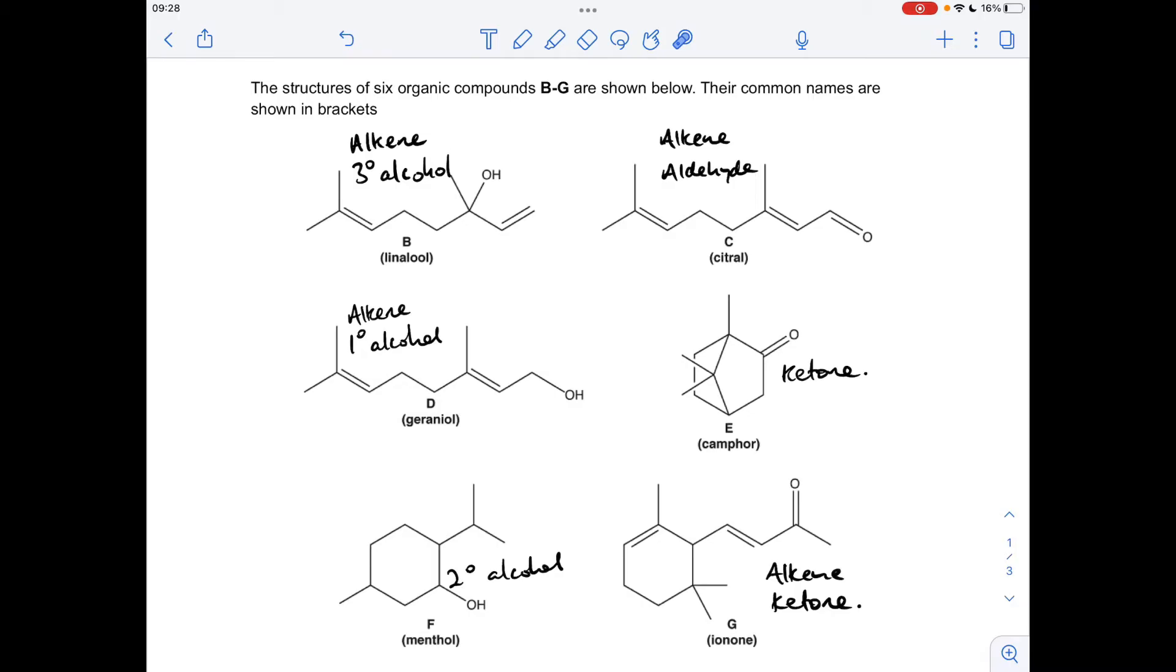So you can see I've already identified the functional groups present in all six molecules. So very quickly, B, alkene obviously, and this is a tertiary alcohol group.